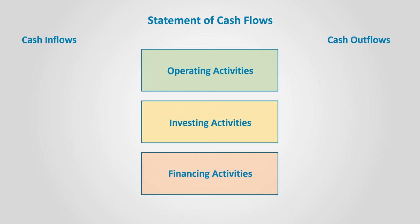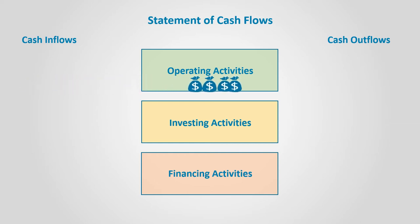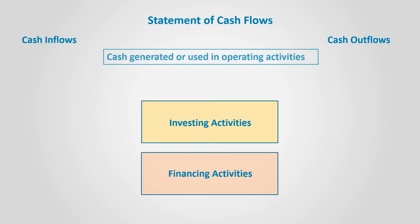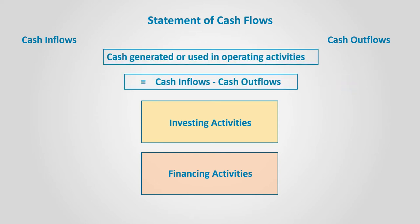The cash flow statement, as previously mentioned, is composed of three main sections: cash related to operating, investing, and financing activities. By subtracting the cash outflows from inflows for operating activities, we get cash generated or used — which is the case if outflows are greater than inflows — from operating activities.